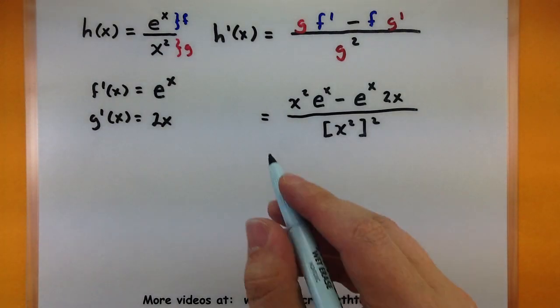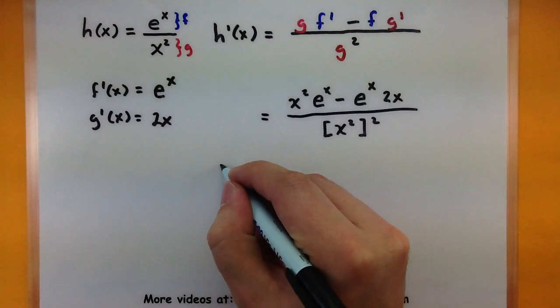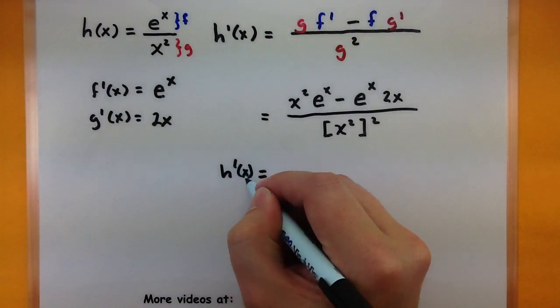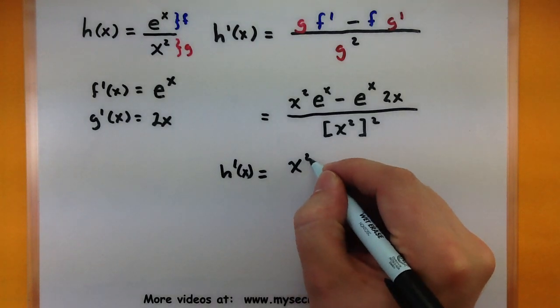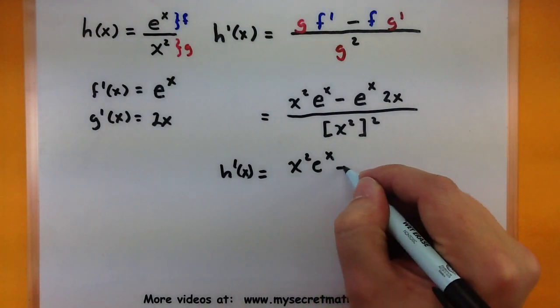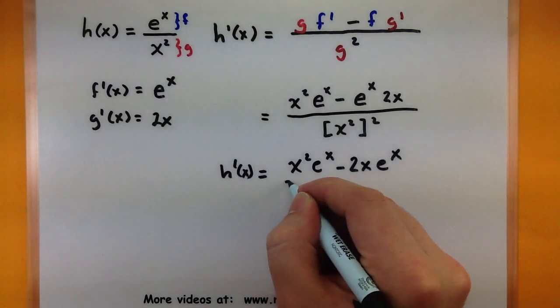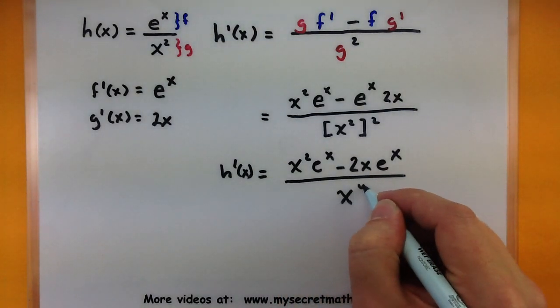Okay, so now all we have to do is simplify this. Maybe look a little bit nicer. Let's see what we got here. So I would write this as maybe x squared e to the x minus 2x e to the x all over x to the 4th.